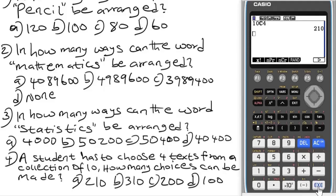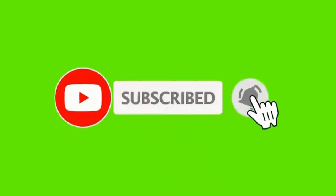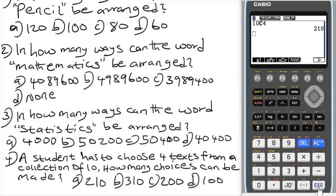That's it for solving problems involving permutation and combination in a scientific calculator. Now, here is a do-it-yourself test for you: in how many ways can the word 'book' be arranged? Leave your answer in the comment section below and I'll join you in the discussion. Thanks for watching. If you are new to the channel, ensure you hit the subscribe button. Like, share, and comment on this video. If you have any specific questions, feel free to leave them in the comment section and I'll give you a response.